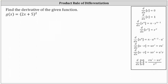We're asked to find the derivative of the given function. We have g of x equals the square of the quantity two x plus five. We have two options to find this derivative: we can square the quantity two x plus five and then find the derivative using the power rule, or because g of x is a composite function, we can find the derivative using the chain rule. We will go ahead and go over both methods.